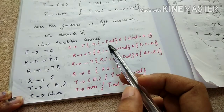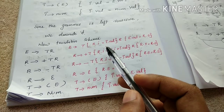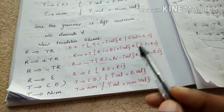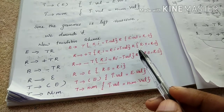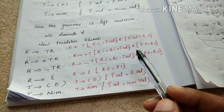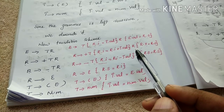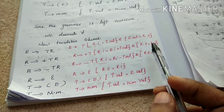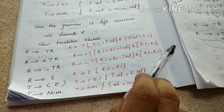By using L-attribute, we use inherited attributes and synthesized attributes. Inherited attribute gets its value either from its siblings or its parents. Synthesized attribute passes value from child to parent. So these are the two types of attributes.